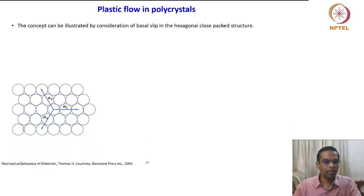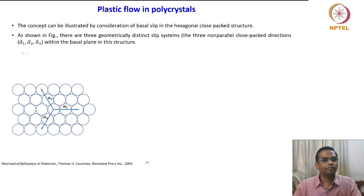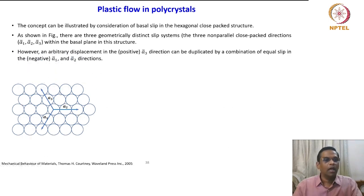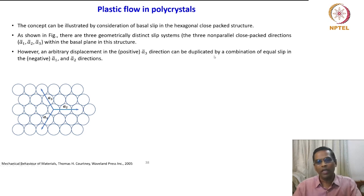Let us take this hexagonal close-packed structure, where three geometrically distinct slip systems exist — the three non-parallel close-packed directions a1-bar, a2-bar, a3-bar — within the basal plane. However, an arbitrary displacement in the positive a3-bar direction can be duplicated by a combination of equal slip in the negative a1 and a2 directions.